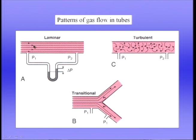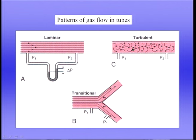If we increase the flow rate, we may reach a point where flow becomes what's called transitional. This is particularly seen where the tube divides into two daughter branches. There's laminar flow in the upper part of the tube, but then you get flow separation and eddy formation, particularly at the junction where the tube divides — this is called transitional flow.